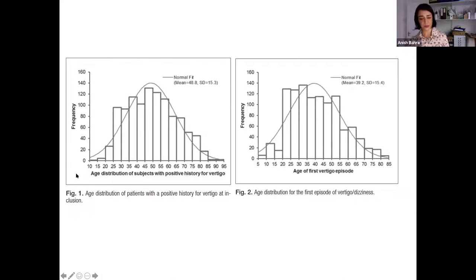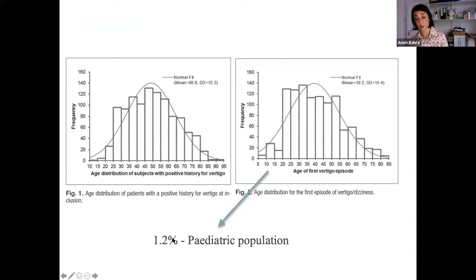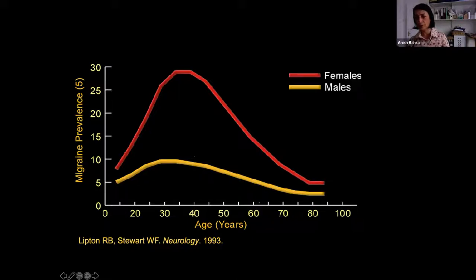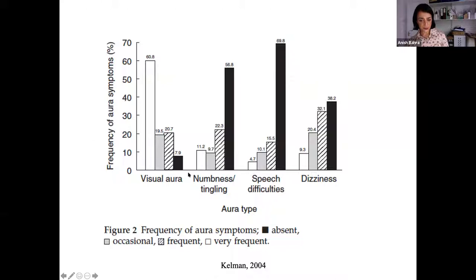The prevalence curve for vestibular migraine peaks at age 40–50, with a small proportion in the paediatric population. This is exactly the same curve as for migraine in general. Compare this to Parkinson's (nothing until around 50, then exponential), dementia (rises after 60–70), or epilepsy (early genetic peak, then rising again with stroke and tumours). The Kelman study shows a large number of people with typical aura who also have dizziness — but because it's just dizziness, it can't be called brainstem aura.